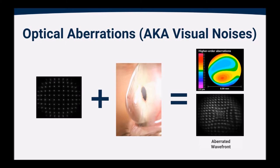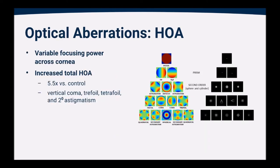Whereas when we do the same thing to a keratoconic individual, you can see how those points are now no longer in focus and no longer in that same regular arrangement. Instead, they're deformed, out of focus, blurred, scattered, and that creates an aberrated wavefront, which gives us that map that we're seeing above. That map is demonstrating a very common visual profile for individuals with keratoconus, and that profile is called vertical coma. Those optical aberrations are the result of having variable focusing power across that cornea, because in some areas that cornea is more curved and in other areas that cornea is flatter, and what that causes is these higher order aberrations.